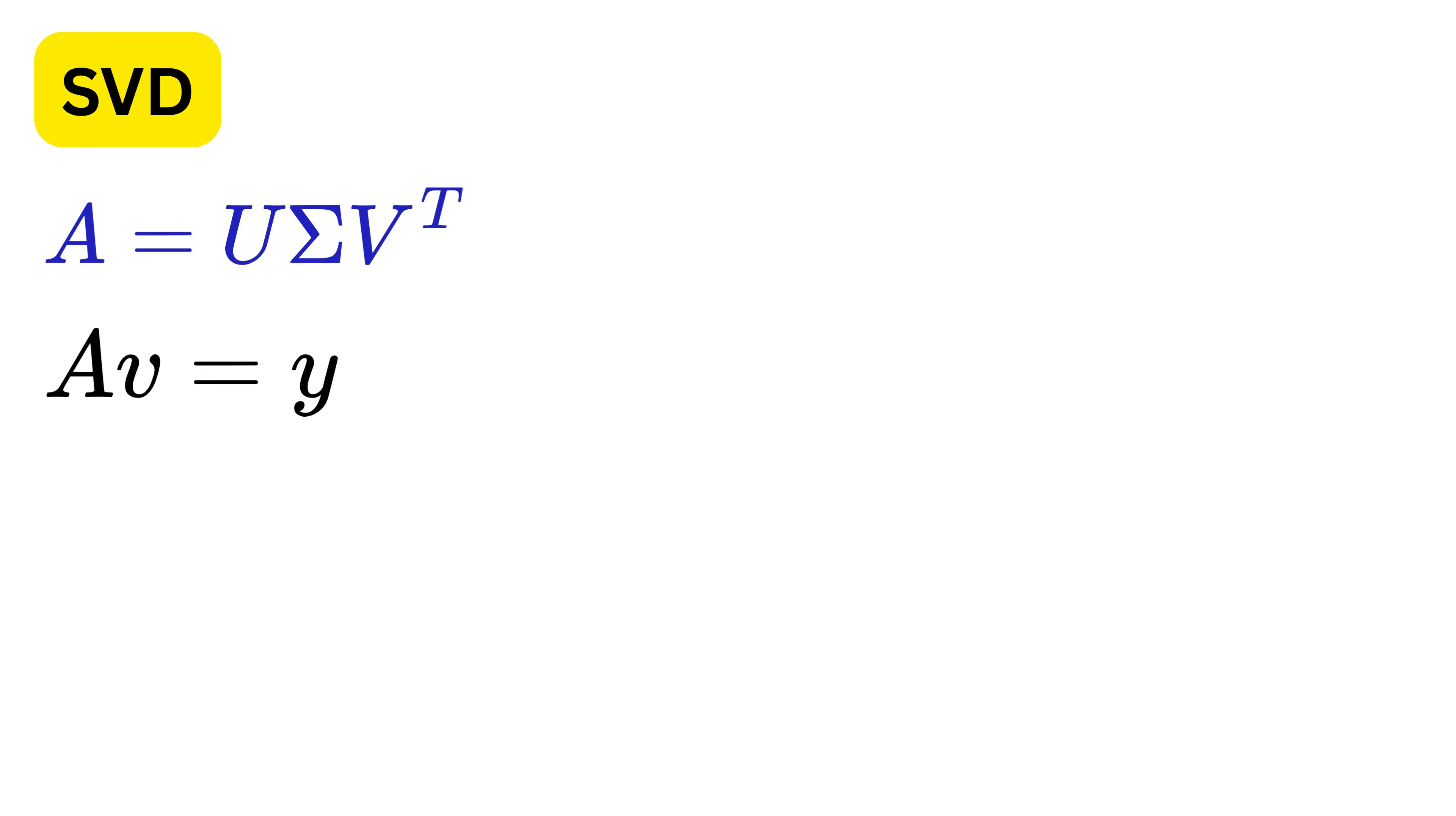So mathematically, SVD solves this optimization problem, where we are trying to find that one unit vector V, for which the length of A times V becomes the largest.